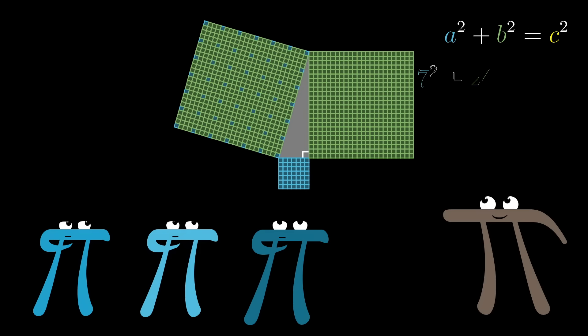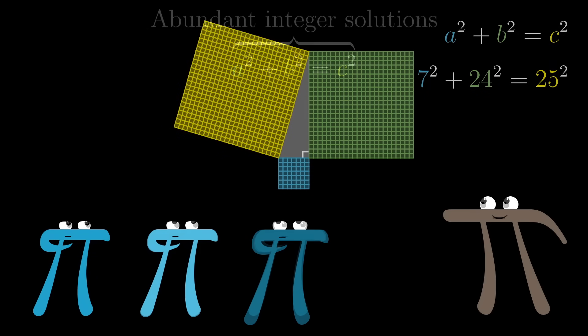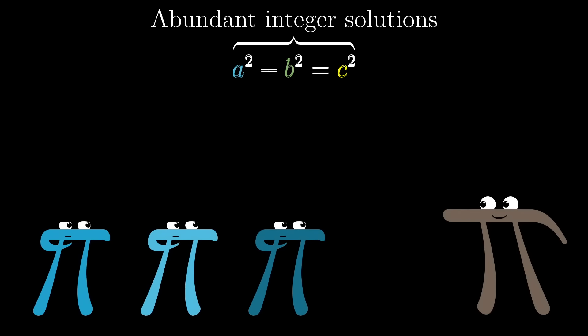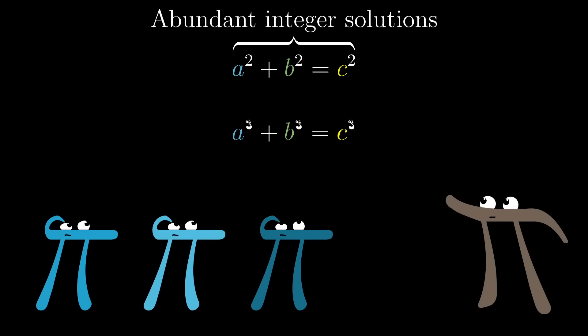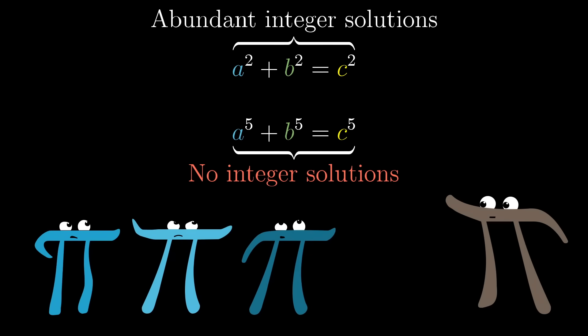But keep in mind for comparison, if you were to change that exponent to any whole number bigger than 2, you go from having many integer solutions to no solutions whatsoever. This is Fermat's famous last theorem.